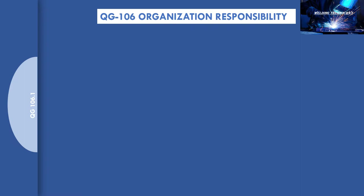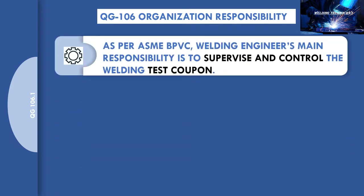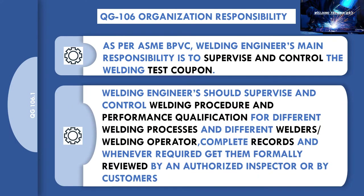As per ASME BPVC Section 9, QG-106 Organization Responsibility, the welding engineer's main responsibility is to supervise and control the welding test. The welding engineer should supervise and control welding procedure and performance qualification for different welding processes and different welders and welding operators, complete records, and whenever required, get them formally reviewed by an authorized inspector or by the customer.